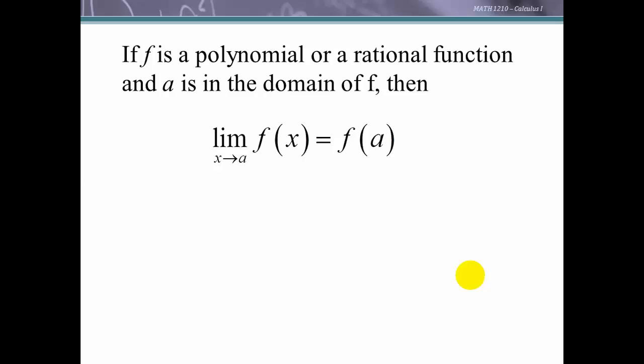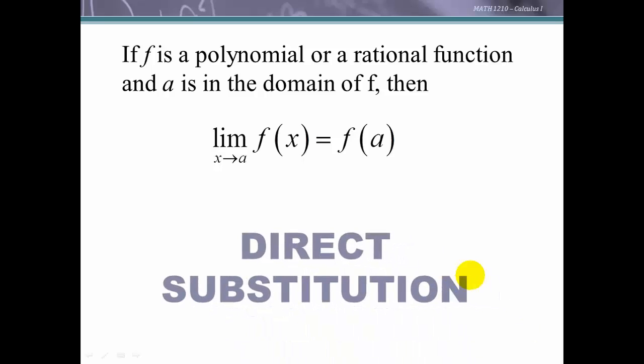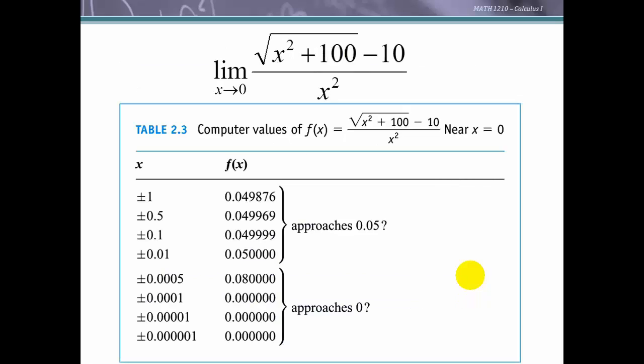If we have a polynomial or rational function and a is in the domain of the function, we can simply evaluate the function at a using what we call direct substitution. The limit laws for sums, differences, powers, and constant multiples all support this. Direct substitution is one of the first things we try, because it is the easiest approach, though it doesn't always work.